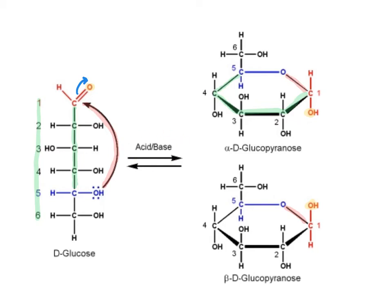Now the other thing I want to point out is, if you come over here to the right and look at carbon 1 — and the same thing on the bottom — what do you notice? We've actually made a new chiral center, and I'm going to put a star by it to show it's really important. When we make a new chiral center, we used to talk about things being R or S, or L or D. The new nomenclature we're going to talk about is alpha and beta. Really simple: if the OH is pointing down, you get the alpha; if the OH is pointing up, you get the beta.